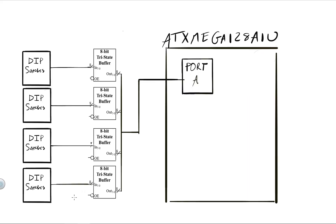To read from any of the eight switches in a specific DIP switch package, I first disconnect the other 24 input signals from the bus by providing a high or false signal to their respective tri-state buffers, then enable the desired one by providing a low or true signal to its OE. I then read from Port A_IN. The remaining question is: where do these four OE signals come from? One intuitive approach is to use a separate port for the control signals.